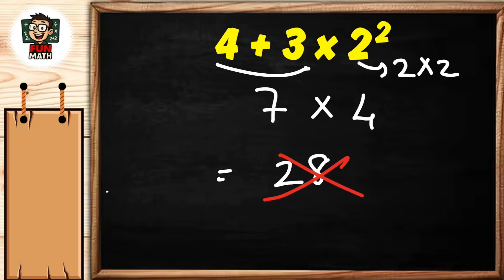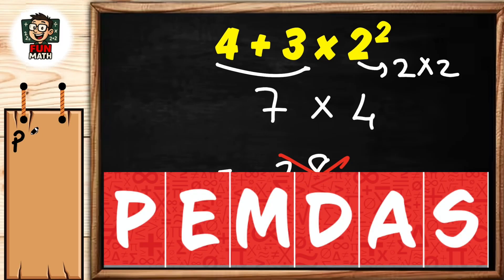We use the order of operations called PEMDAS. P stands for parenthesis, E stands for exponents, M stands for multiplication, D stands for division, A stands for addition, S stands for subtraction.